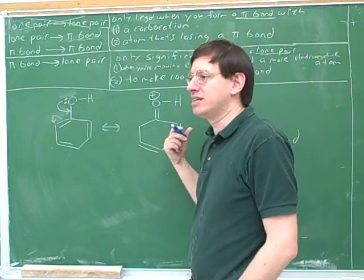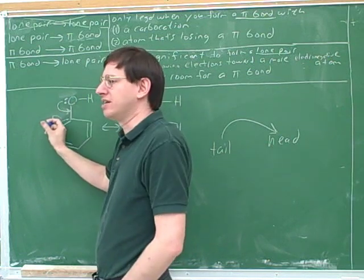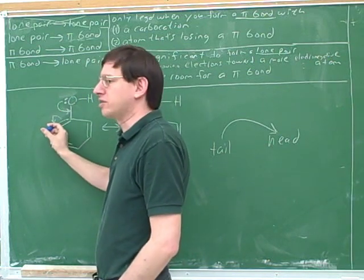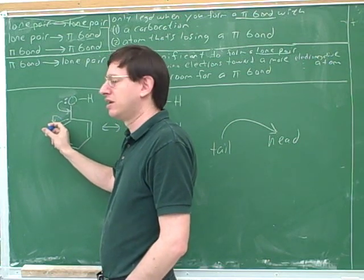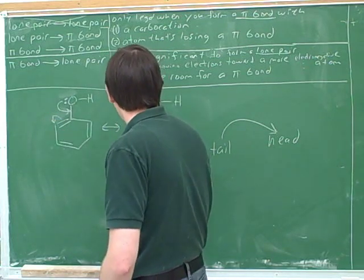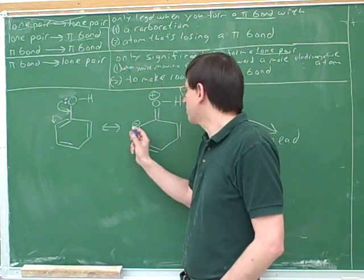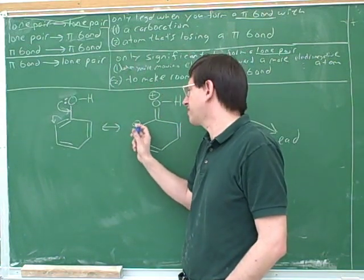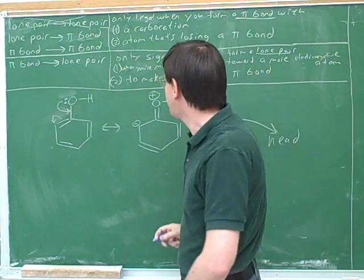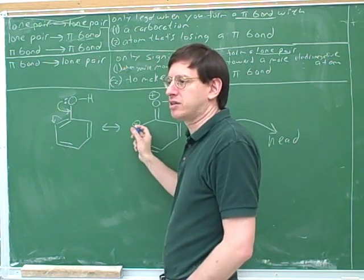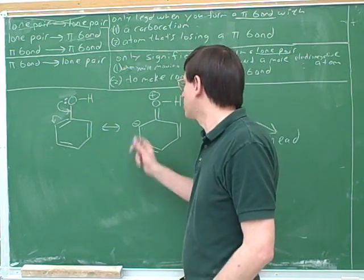We also change the charge at the final head. The final head is at the very end of the arrow string. What charge did this start with? It started neutral and it's gaining electrons, so it ends up with a negative charge. It should be very straightforward to determine this charge — we don't actually have to count the lone pairs using general chemistry skills.